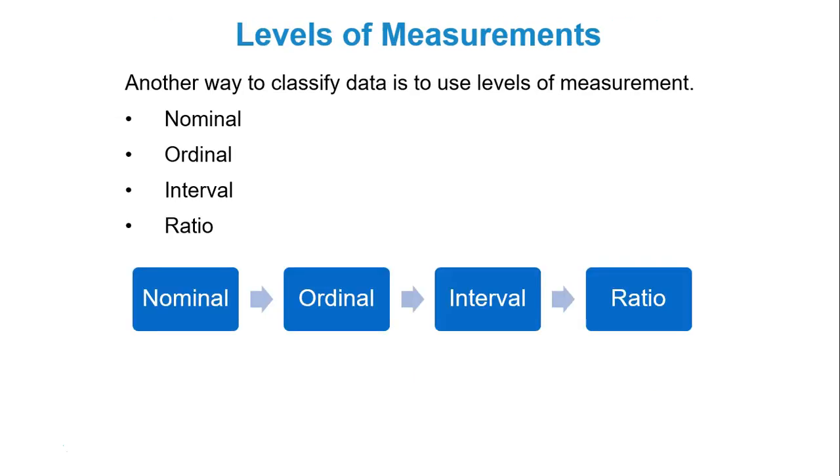Next is levels of measurement. This is a totally different way of classifying data. So these are literally like a hierarchy where the most basic or generic form or label of data is nominal, then ordinal, then interval, then ratio. It's an order. It's a hierarchy. Ratio is on the top and nominal is on the bottom, so to speak.